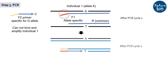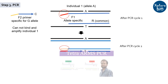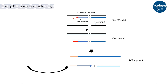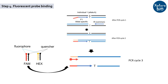During PCR cycle 2, using the same F1 and common reverse primer, individual 1's DNA gets amplified. But this time you can see the sequence complementary to the overhang region — that is the tail region — is also getting amplified. A similar method to detect SNP is Tetra ARMS PCR, which is a non-fluorescent agarose gel-based visualization technique, on which I have already made a detailed video. Now, if you recall, in the CASP marker technique I talked about fluorescent probes. During PCR cycle 3, the probes complementary to the tail region of the allele-specific primer can now bind and emit fluorescence.